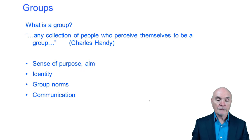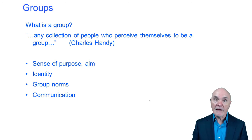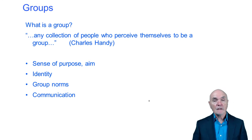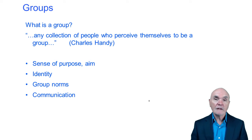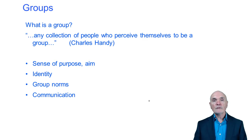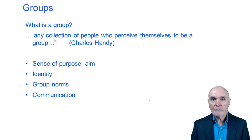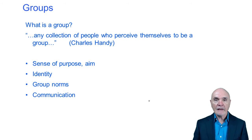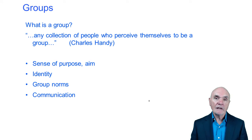It's important to realise that a group can therefore be a formal group — in other words, management sets up a group, like a project team, to put in a new IT system. Or it can be informal and perhaps unknown by management. A group can be a group of workers who decide that they want to protect their positions at work, or who decide they're not going to work any harder because they don't think the pay is right, and they therefore regard themselves as a group of people. It's been informal — management may not know about that.